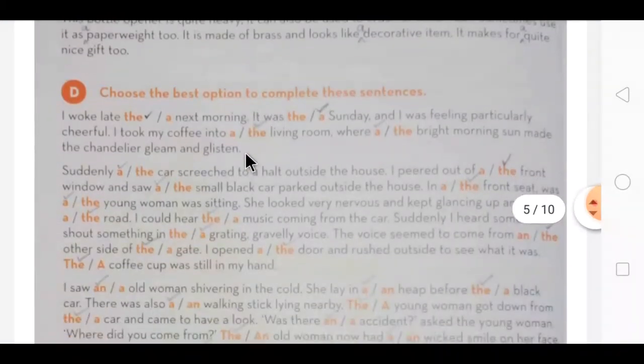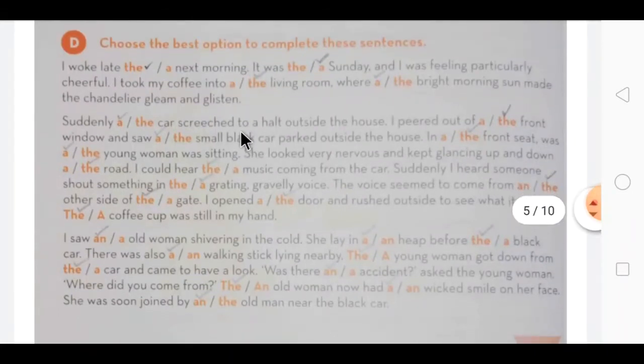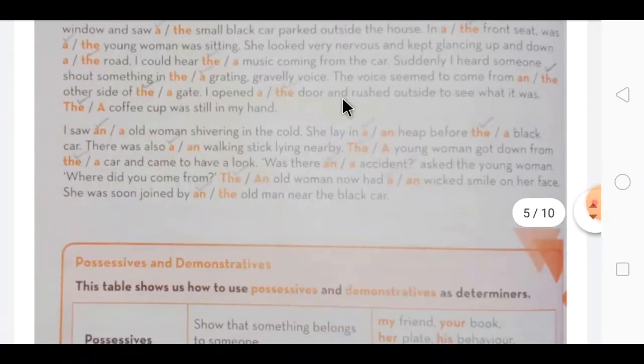Now on next page, exercise number C. You have to insert articles wherever required. Where articles are missing, where they are necessary, there with an arrow you have to put the article. That way wherever the articles are missing you have to put the articles.